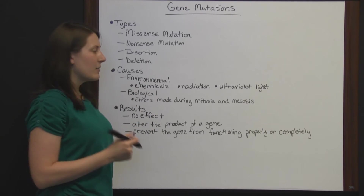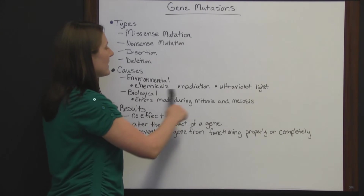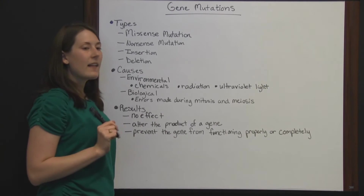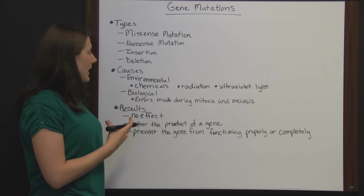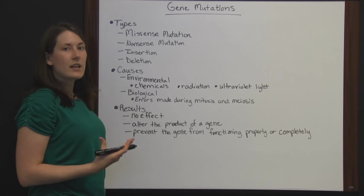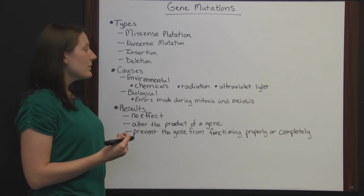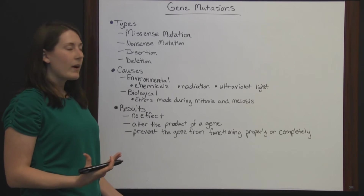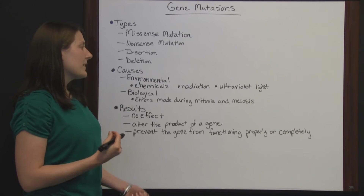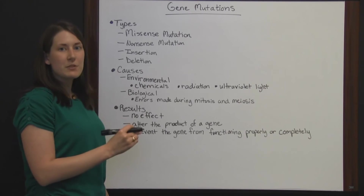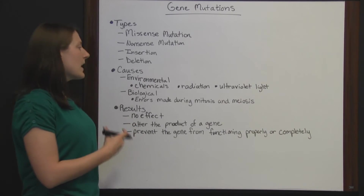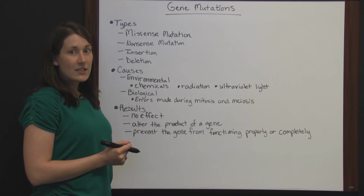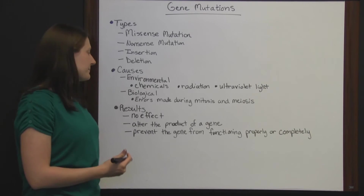any amount of certain chemicals, and too much radiation or ultraviolet light, can make your cells mutate. It isn't something that happens always, and you can't say this will specifically happen, but these are environmental causes linked to gene mutation.